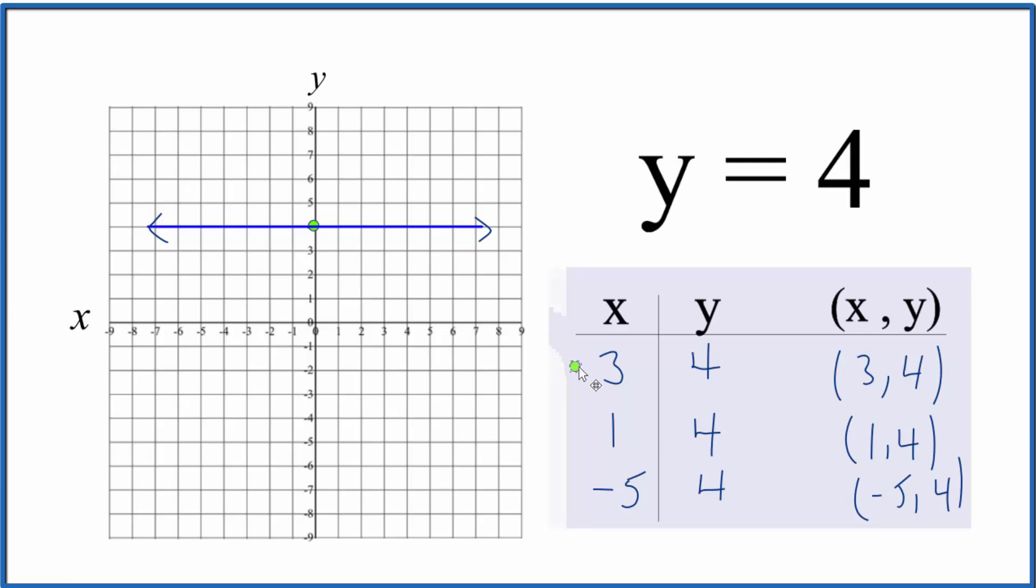So let's graph them. x is 3 and y is 4. x is 1, 2, 3, y is 4. Right there on our line.